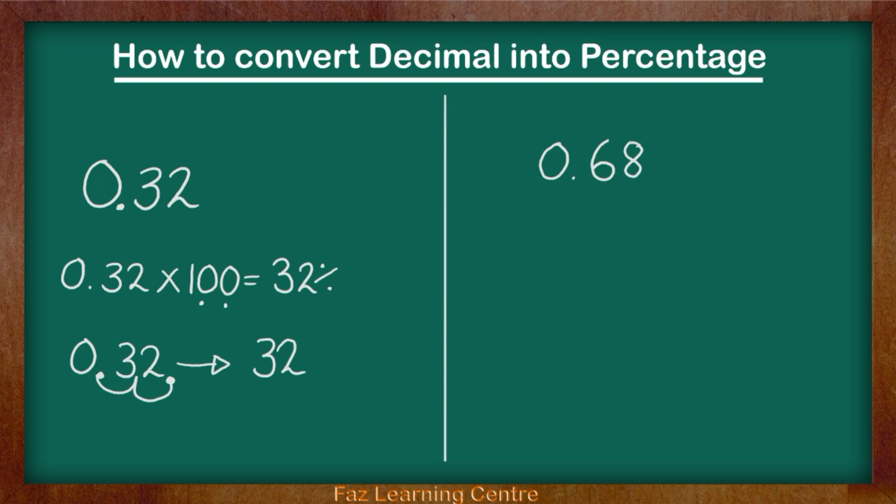In order to convert 0.68 into a percentage we know that we need to times it by 100. Let's write down the sum 0.68 times by 100. Now I am going to write the number 0.68 so that I can move the decimals forward.